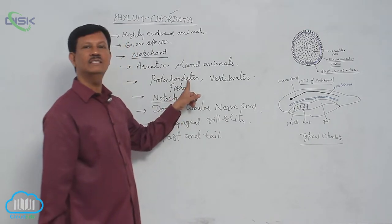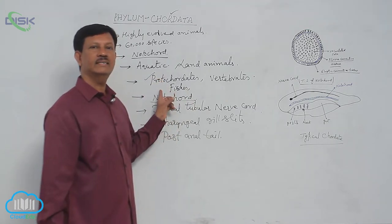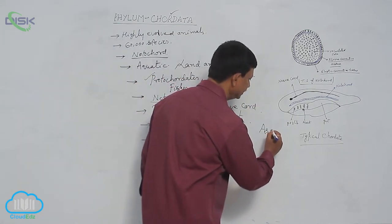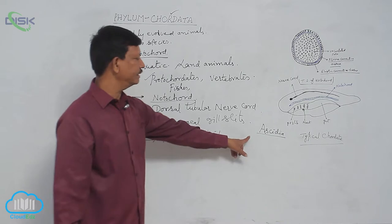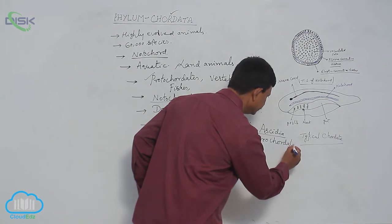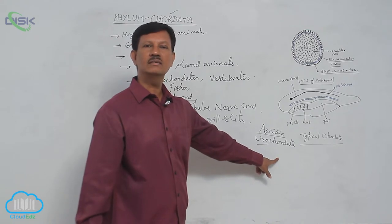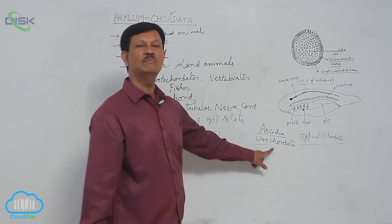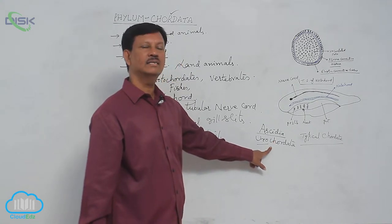Notochord is present throughout their life in protochordates. For example, you can take Urochordata. In Urochordata, 'uro' means tail and 'chord' means notochord. Notochord is situated at the tail region in these animals. That is why the subphylum name is derived as Urochordata.